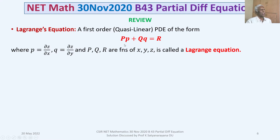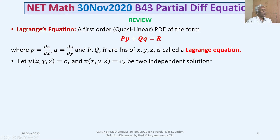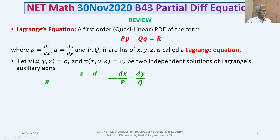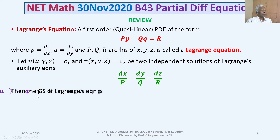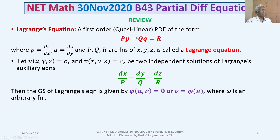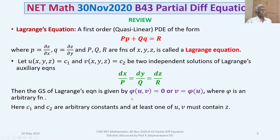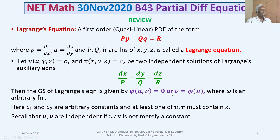Let u(x, y, z) = c₁ and v(x, y, z) = c₂ be two independent solutions of Lagrange's auxiliary equations dx/P = dy/Q = dz/R. Then the general solution of Pp + Qq = R is given by φ(u, v) = 0, or equivalently v = φ(u) or u = φ(v), where φ is an arbitrary function and c₁, c₂ are arbitrary constants.